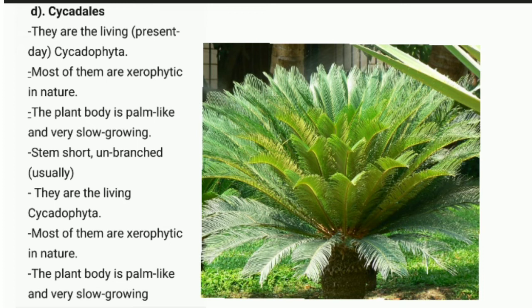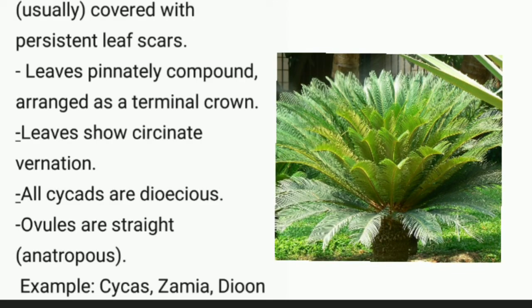Cycas plants are covered with persistent leaf scars, meaning the leaves remain green perennially throughout the year. Leaves are pinnately compound, arranged as a terminal crown. Leaves show circinate vernation, meaning they are arranged like a closed bud before opening.